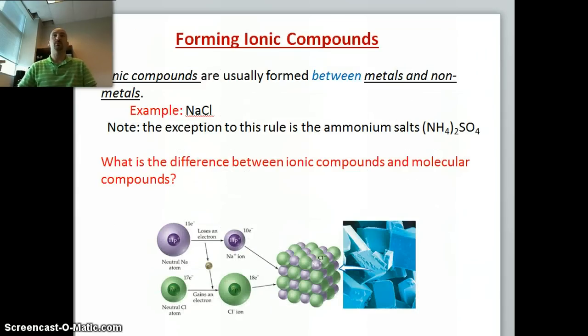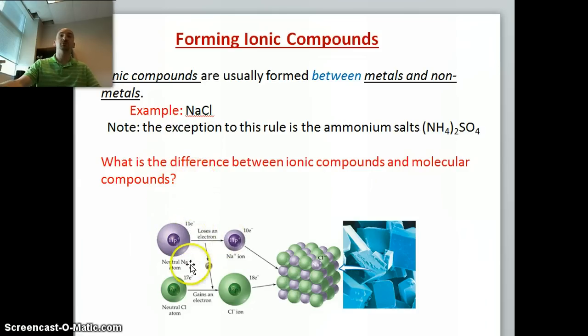How do we form ionic compounds? An ionic compound is formed between a metal and a non-metal, whereas molecular compounds are between two non-metals. In this figure, an electron from a sodium atom is transferred to a chlorine atom, which forms a sodium cation and a chlorine anion. These then come together and form sodium chloride ion called salt.